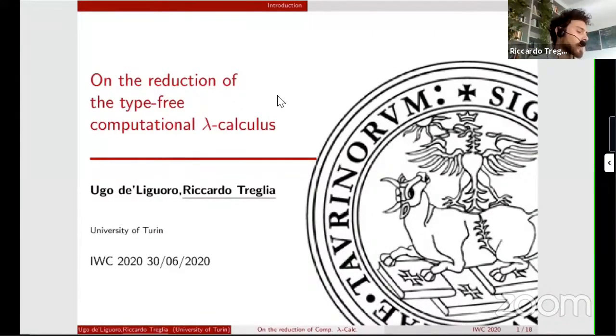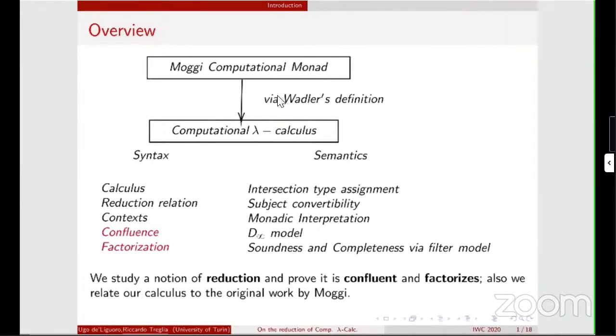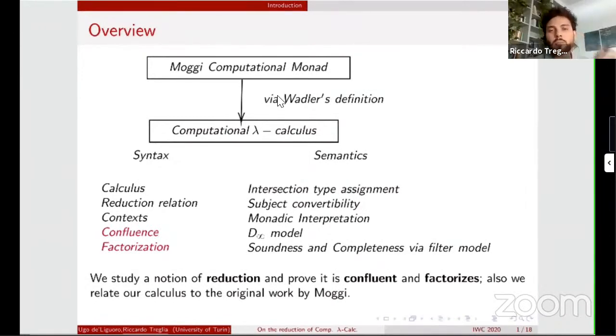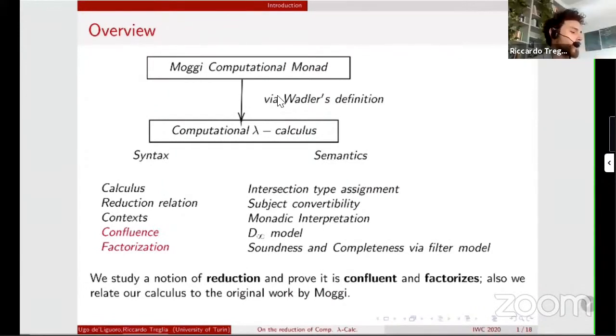Today we will talk about our confluence and factorization results for computational lambda calculus. What we will present today is part of a wider ongoing research topic stemming from Moggi's computational monad and computational lambda calculus. The intuition behind is to encapsulate non-functional parts of programming languages in the meta-language that is lambda calculus. We will study our computational lambda calculus by a world-first definition of computational monads and exploit the parametricity behind computational monads. What we will talk today is the syntax part,